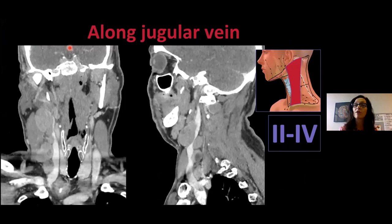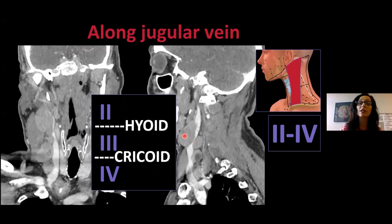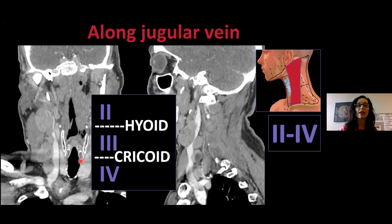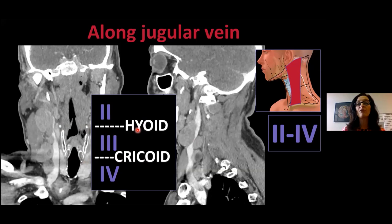Levels 2, 3, and 4 are nodes along the jugular vein in the lateral aspect of the neck. We separate these jugular chain nodes into three groups using clear cross-sectional imaging landmarks. The inferior margin of the hyoid bone separates level 2 from level 3. The inferior margin of the cricoid cartilage distinguishes level 3 from level 4. Those are your critical landmarks to look for on a CT scan.